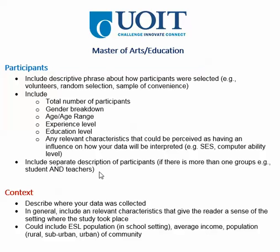Now if you have two or more populations — for example, you collected data from both students and teachers — you'd want to describe each in two separate subsections. With respect to context, you want to describe where your data was collected. In general, you're including all the relevant characteristics that give the reader a sense of the setting.